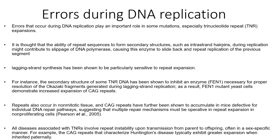Errors during DNA replication can play important roles in some mutations, especially trinucleotide repeat expansions such as Huntington's disease. The ability of repeat sequences to form secondary structures such as intrastrand hairpins during replication could contribute to slippage of DNA polymerase, causing the enzyme to slide back and repeat replication of a previous segment. In Huntington's disease the CAG repeat on the lagging strand synthesis has been shown to be particularly sensitive to repeat expansion. The lagging strand involves Okazaki fragments, and an enzyme called FEN1 is needed for proper resolution of these fragments — a mutation in FEN1 increases the expansion of CAG repeats.